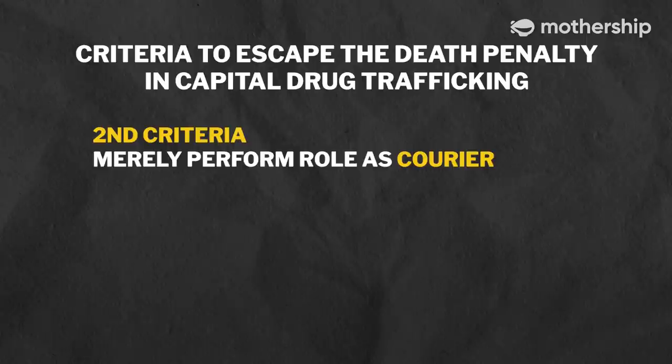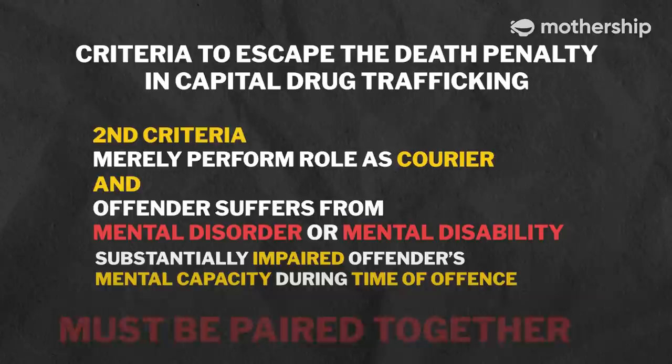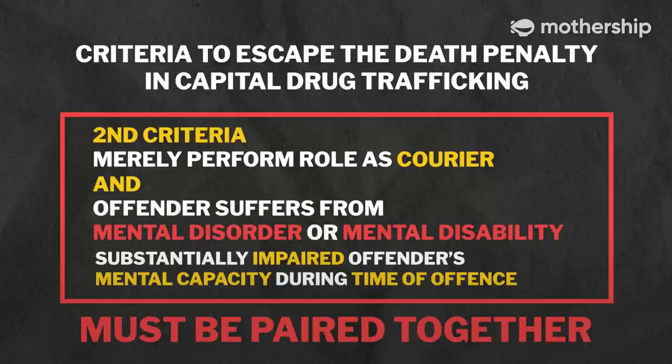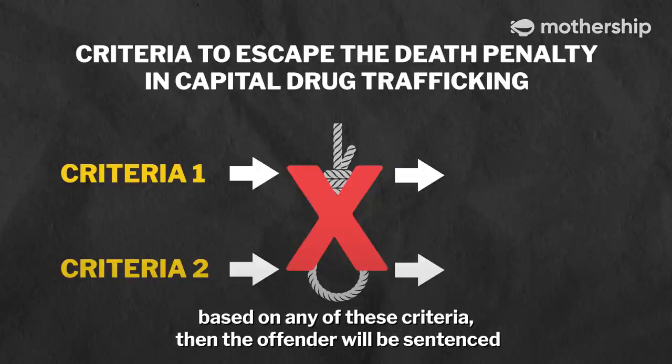Another criteria: they must merely perform the role of a courier, and it will be a case where the offender suffers from a mental disorder or mental disability which substantially impacts their mental capacity at the time of their offending. In short, if the death penalty is not imposed based on any of these criteria, then the offender will be sentenced to life imprisonment with 15 strokes of the cane.